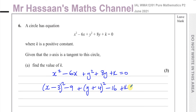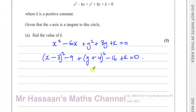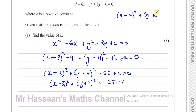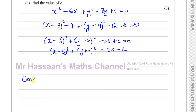Then I've got plus k at the end, equal to 0. Taking the constant terms to the other side: x minus 3 squared plus y plus 4 squared equals 25 minus k. We know that a circle written in the form x minus a squared plus y minus b squared equals r squared has center (a, b) and radius r. So here the center of the circle is (3, −4), and the radius is the square root of 25 minus k.